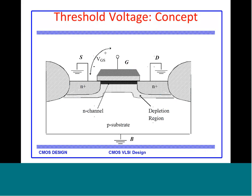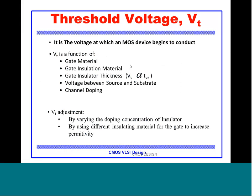Let us look at VT in detail — it appears so much in the equations and whenever VGS < VT the transistor does not conduct. VT is a very important parameter in device fabrication. We saw that a positive VGS results in a depletion region and ultimately in the inversion layer being formed. VT is the minimum gate voltage at which the MOS device begins to conduct.